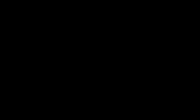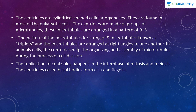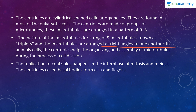It is consequently suggested that centrioles have evolved as a cell refinement that makes mitosis a more efficient and less error-prone process. Centrioles are cylindrical-shaped organelles found in most eukaryotic cells. Their microtubules are arranged in a pattern of nine triplets. The triplets form a ring of nine microtubules arranged at right angles to one another. In animal cells, the centrioles help in organizing an assembly of microtubules during cell division.